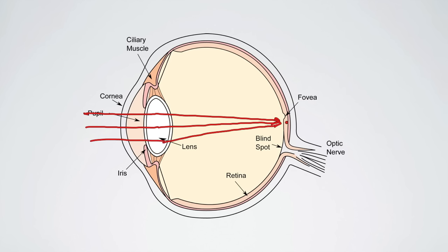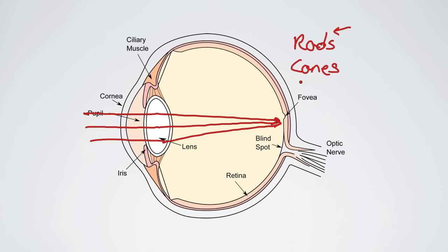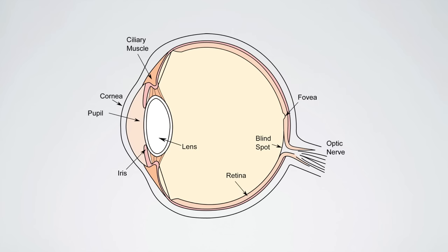In the retina we have rods and cones — these are the receptors that allow us to see. We're going to look at what's happening inside these rods and use that as an example. The process that happens in rods and cones is relatively similar. Yes, there are some nuances and differences between the two, but by understanding what happens in the rods, we'll also have an idea of what happens in the cones.